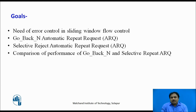There are two methods defined. The first is Go-Back-N ARQ, standing for Automatic Repeat Request, and the second is Selective Reject Automatic Repeat Request. At the end, we are going to compare the performance of these two methods.